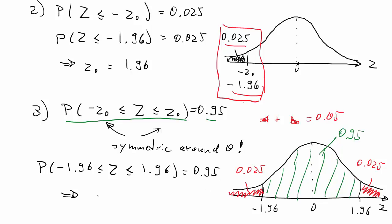Okay, but that was easy because it was symmetric. So z0 is 1.96.